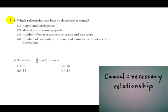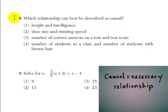Question number eight asks which relationship can best be described as causal, and we're given the choices: height and intelligence, shoe size and running speed, number of correct answers on a test and test score, number of students in a class and number of students with brown hair.